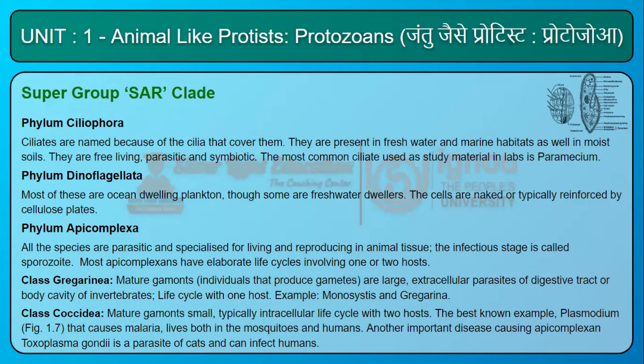Phylum Apicomplexa: All the species are parasitic and specialized for living and reproducing in animal tissue. The infectious stage is called sporozoite. Most apicomplexans have elaborate life cycles involving one or two hosts. Class Gregarina — mature gamonts, individuals that produce gametes, are large extracellular parasites of the digestive tract or body cavity of invertebrates, with a life cycle involving one host.